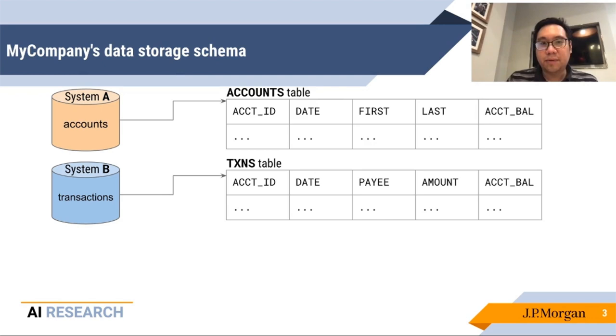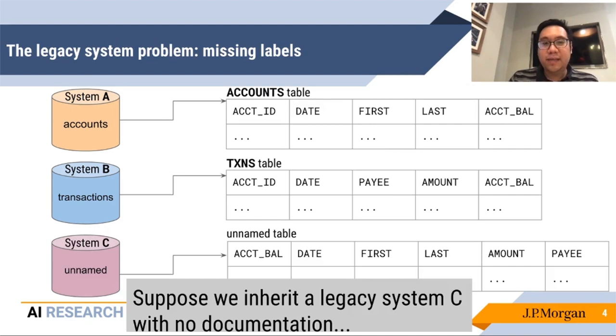Similarly for transactions in system B, there is a transactions table. It also has an account ID and a date, but it has different information for the other columns. It has a payee, an amount, and an account balance. Suppose we now inherit a new system, system C, that has no documentation.